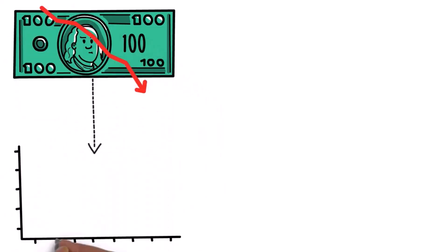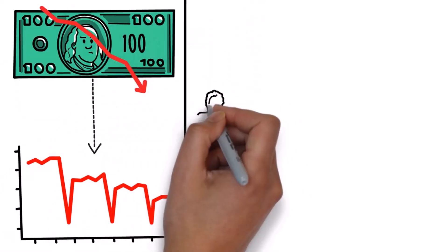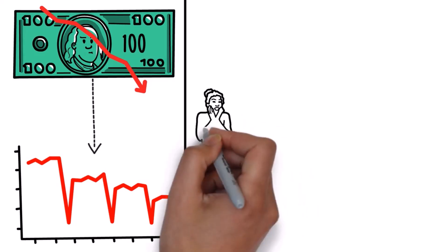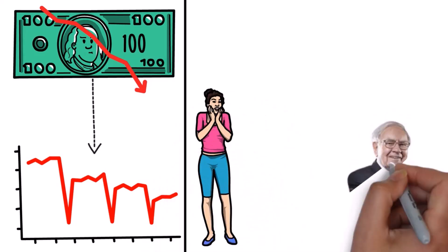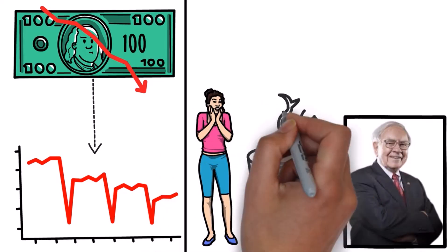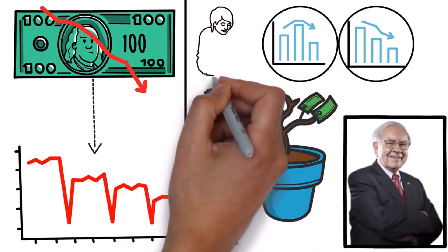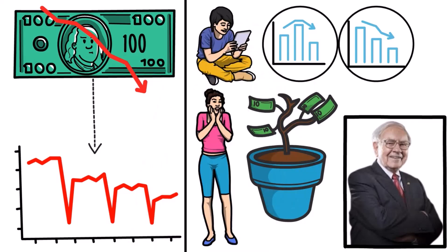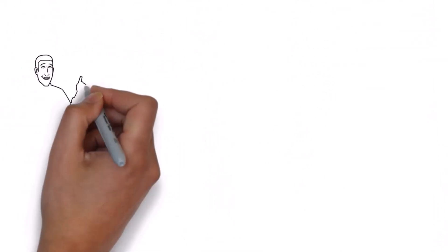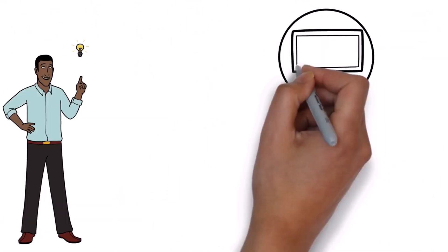Recessions have caused some of the worst market crashes in history, and the word itself is enough to instill fear and panic in people. So why did Warren Buffett, one of the wealthiest men in the world, hope to see many more of them? After studying him and other famous investors for years, now I know why, and I will explain it to you in this video.